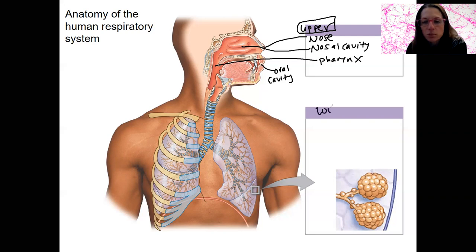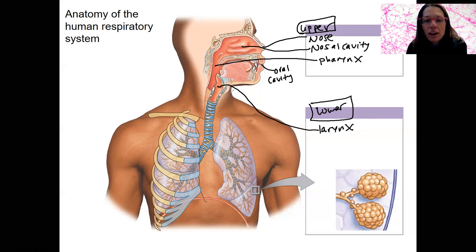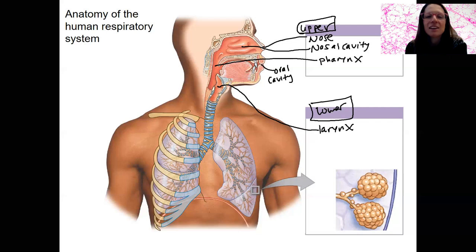Then we've got our lower respiratory system. We're still going to be just conducting at first, but that's an important job. There are also going to be other functions. For example, the larynx — it's part of the conducting passageways, but it's also going to be involved in sound production and keeping food from going down the trachea, which is what you don't want. Notice the esophagus is right here.